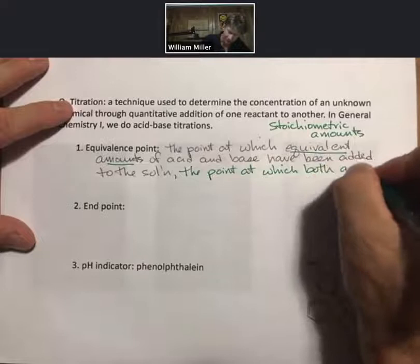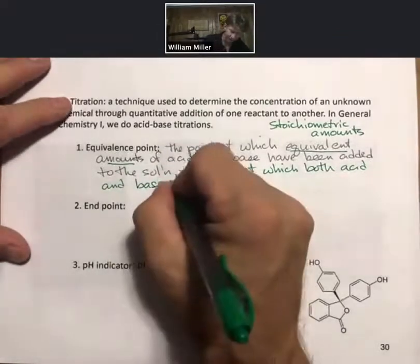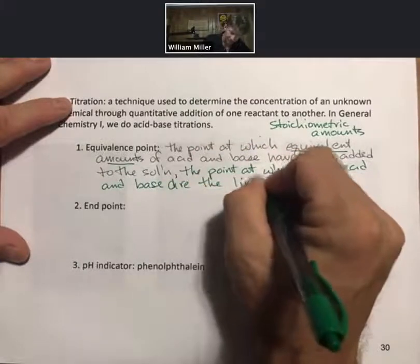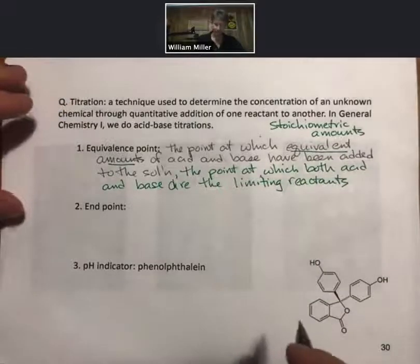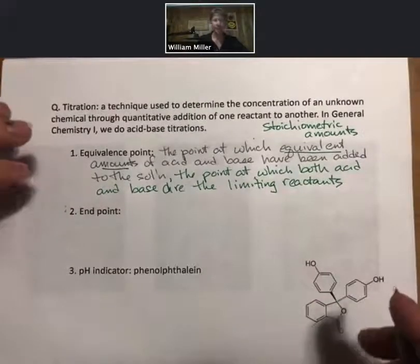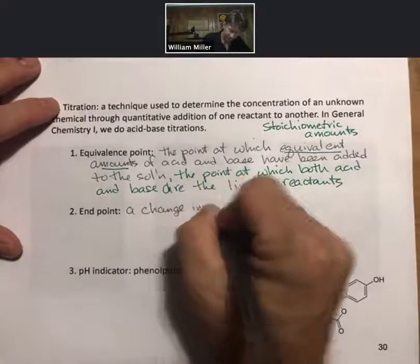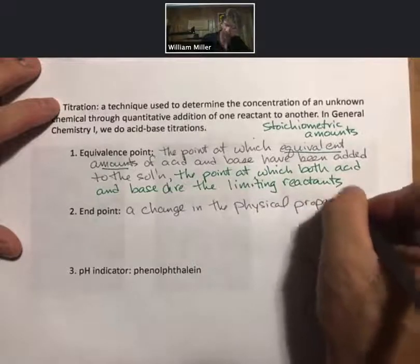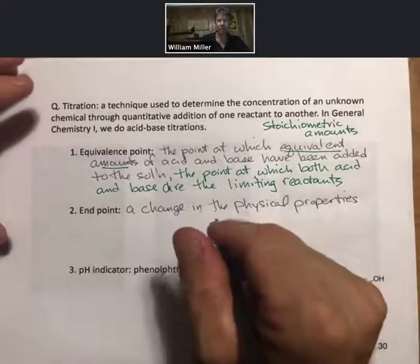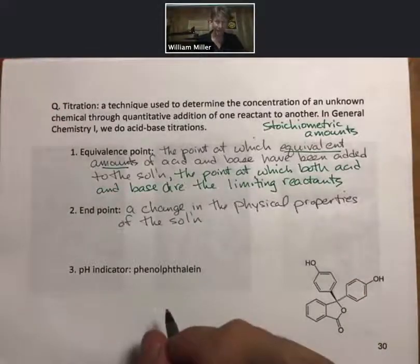Both acid and base are the limiting reactants. And the end point, on the other hand, is a change in the physical properties of the solution, where physical properties could be color, conductivity, are two common examples. A change in the physical properties of the solution that closely matches the equivalence point.